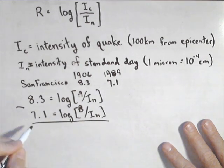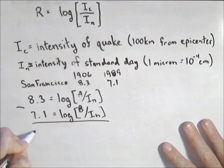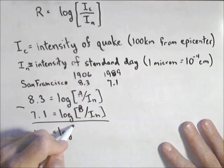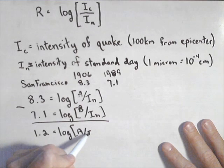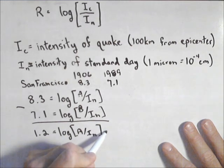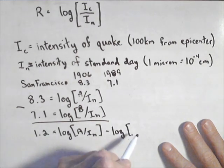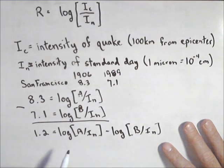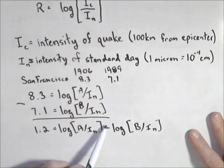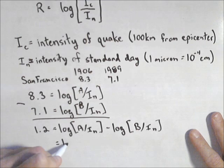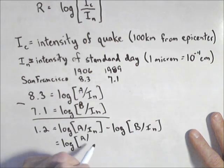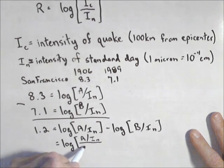So what I'm going to do is I'm going to subtract my two equations. So on the left hand side that gives me 1.2 equals log of A over I sub n minus log of B over I sub n. Now I'm going to combine those using my property of logs, which says subtraction of two logs can be rewritten as a single log with division. So what I have is A over I sub n all over B over I sub n.